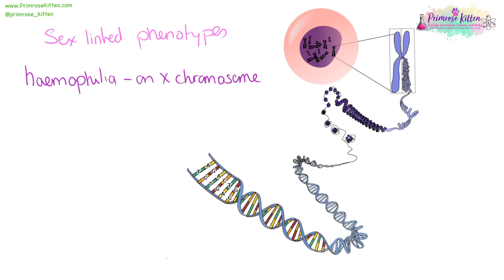There are some phenotypes, apart from sex, which are sex-linked. For example, haemophilia — the gene that results in haemophilia is on the X chromosome. Whereas females have two X chromosomes and are much more likely to have a dominant and a recessive gene, if a male inherits the recessive gene for haemophilia, they have no corresponding dominant gene because they only have one X chromosome.